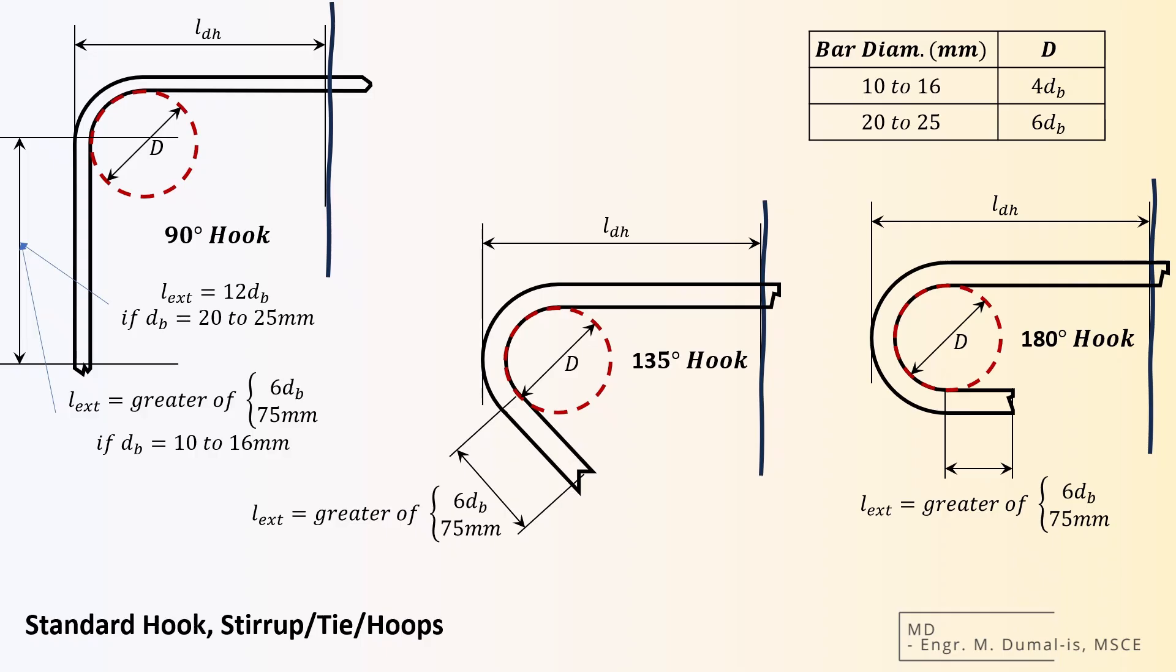For secondary reinforcement hooks, like for ties, stirrups, or hoops, there will be an additional provision for 135 degree hook. The length is still comprising of the Ldh, bend, and extension, but with slight modification to the values as compared to standard main bar hooks.